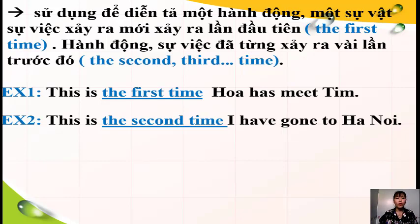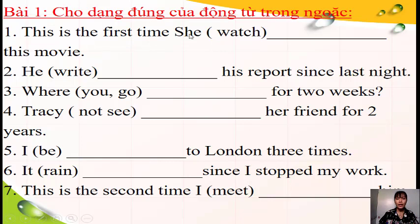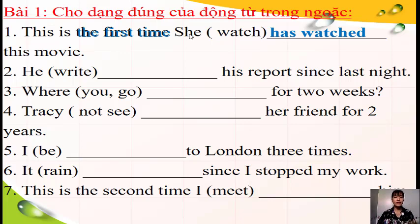Công thức cô đã vừa củng cố lại cho các em. Hãy sử dụng công thức để làm bài tập. Khi đến phần này, các em hãy dừng video lại, tự làm rồi hãy đối với đáp án. Câu số 1: từ nhận biết là 'the first time', chủ từ là 'she' số ít, nên chia thành 'has' và động từ 'watch' có quy tắc - thêm '-ed'. Câu số 2: từ nhận biết là 'since', chủ từ 'he' số ít - chia thành 'has written', vì động từ 'write' là động từ bất quy tắc.